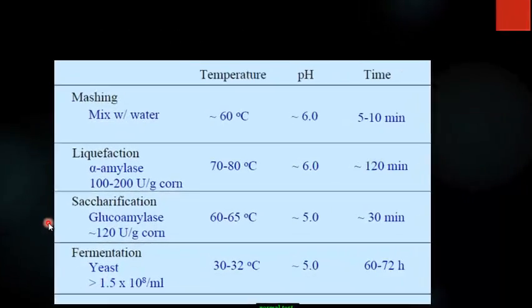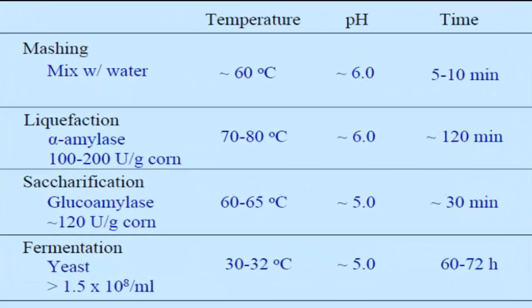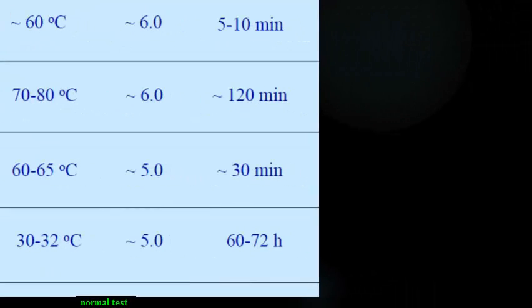Looking at the temperature, pH, and time requirements for each operation: for mashing, hot water is mixed, pH must be around 6, and the time required is not more than 10 minutes. For liquefaction, alpha-amylase is used at a concentration of 100 to 200 units per gram of corn, temperature of 70 to 80 degrees Celsius, and the operation completes in one to two hours.